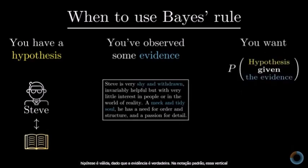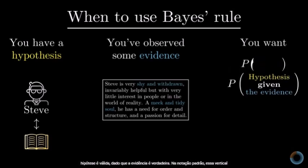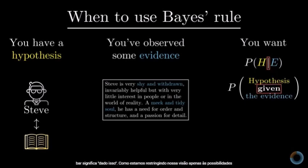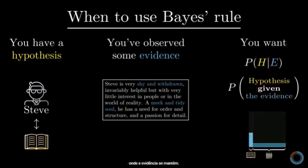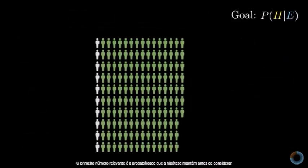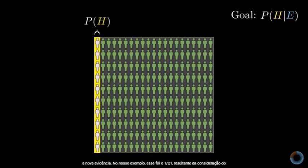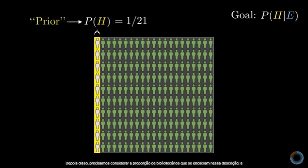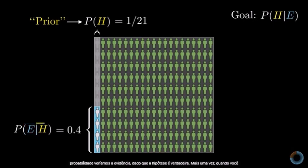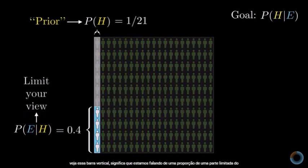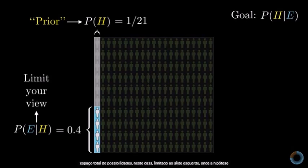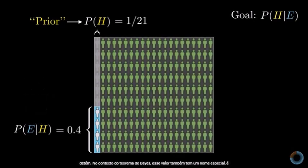You want to know the probability that your hypothesis holds given that the evidence is true. In the standard notation, this vertical bar means 'given that' — we're restricting our view only to possibilities where the evidence holds. The first relevant number is the probability that the hypothesis holds before considering any new evidence — the prior, which in our example was 1 out of 21, from the ratio of librarians to farmers. Then we need the probability that we would see the evidence given that the hypothesis is true — this is called the likelihood. Similarly, you need the probability of seeing the evidence given that the hypothesis isn't true.